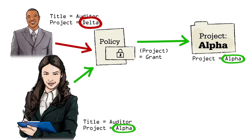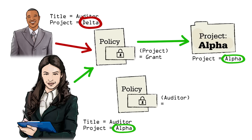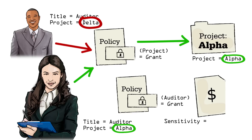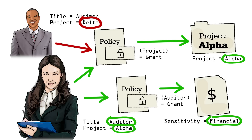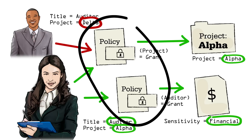Another policy can be established to ensure only auditors get access to sensitive financial data. The combination of these policies would ensure only the auditor assigned to the project would have access to that client's financial data. In this scenario, they only need to manage two policies for all projects.